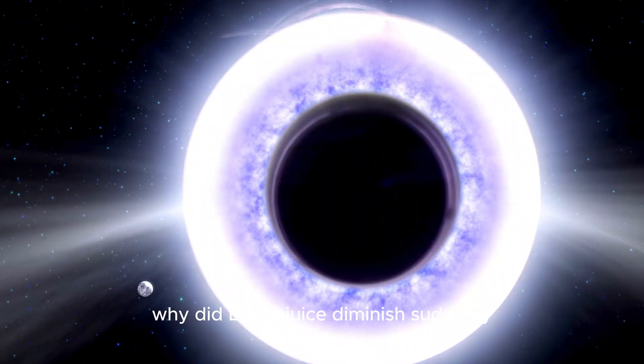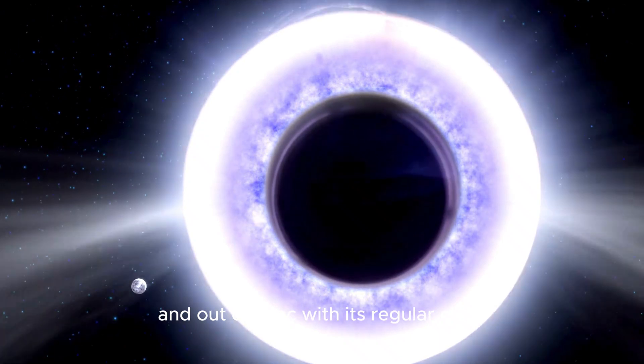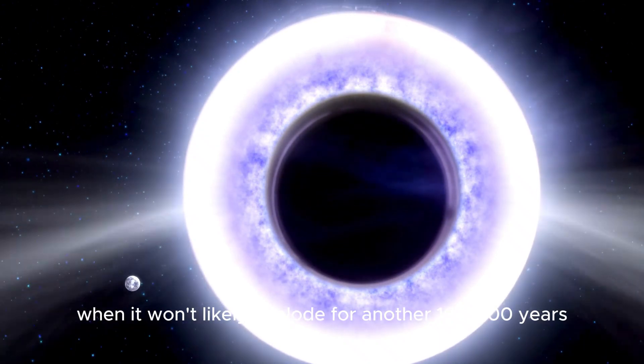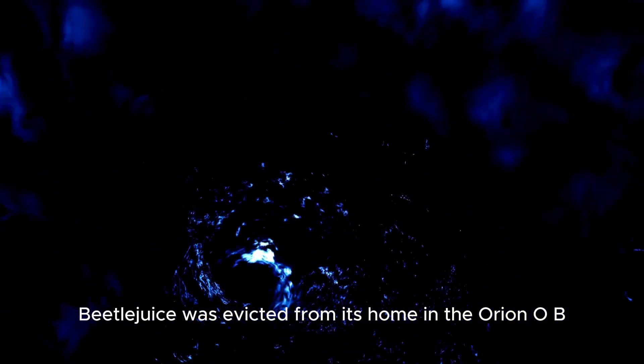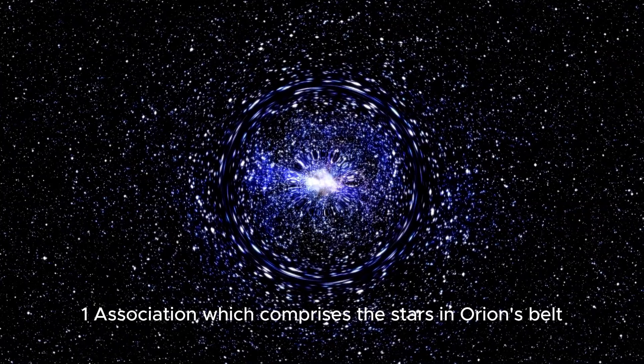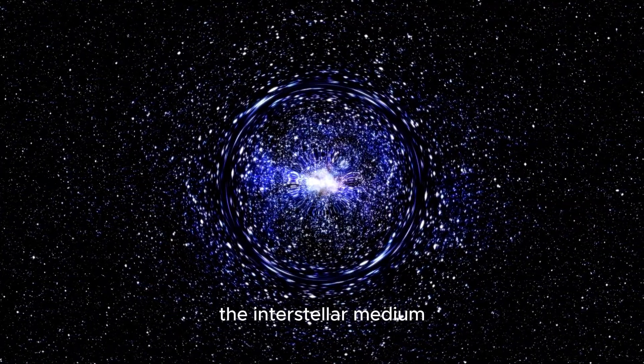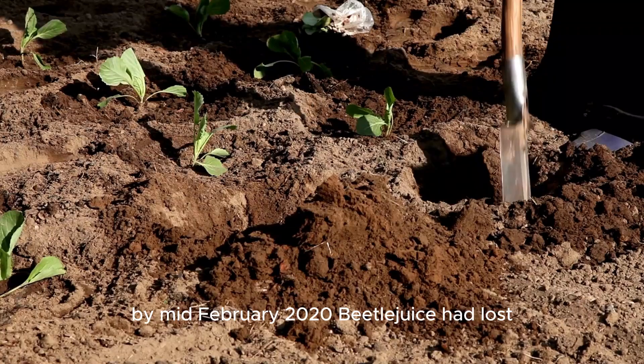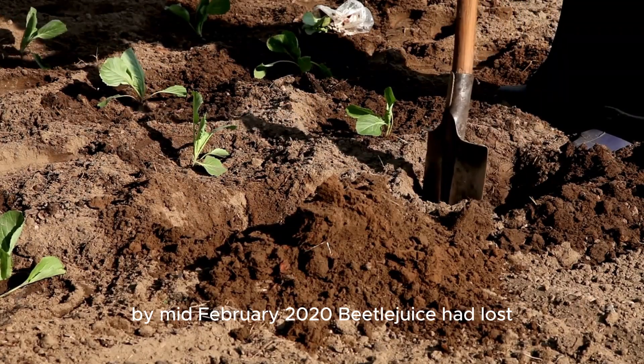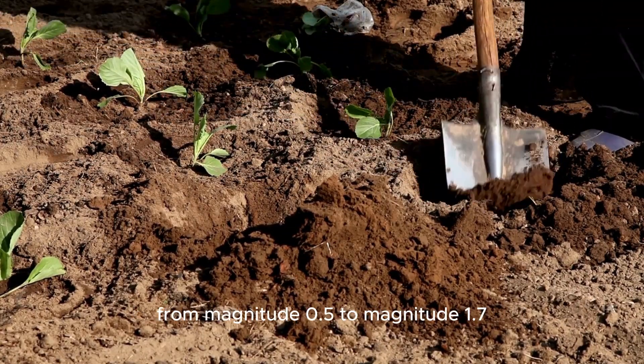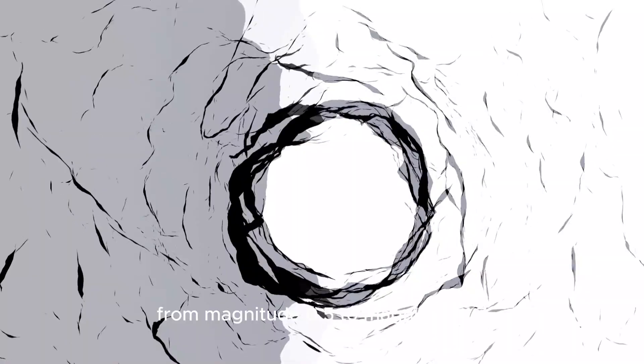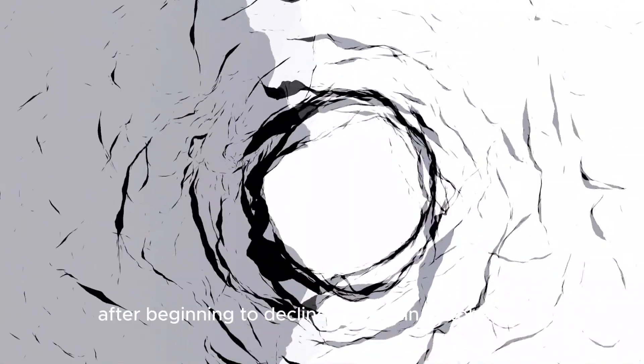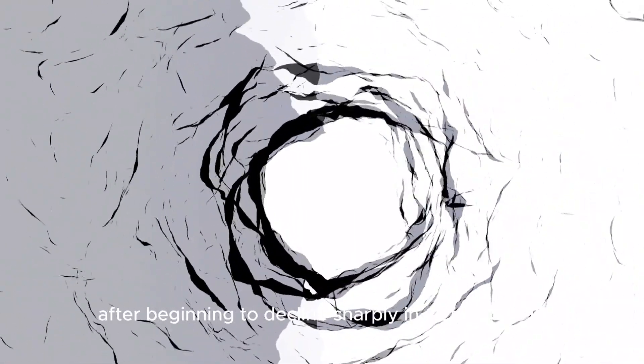Why did Betelgeuse diminish suddenly and out of sync with its regular cycle when it won't likely explode for another 100,000 years? Betelgeuse was evicted from its home in the Orion OB1 Association, which comprises the stars in Orion's belt and has been seen moving through the interstellar medium at a speed of more than four light-years wide. By mid-February 2020, Betelgeuse had lost and found three times as much brightness, from magnitude 0.5 to magnitude 1.7, after beginning to decline sharply in October 2019.